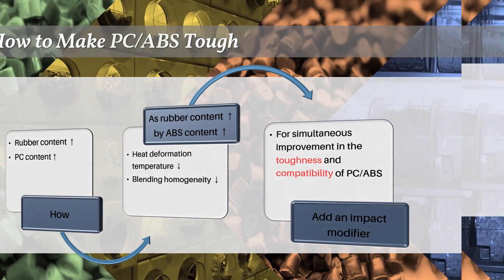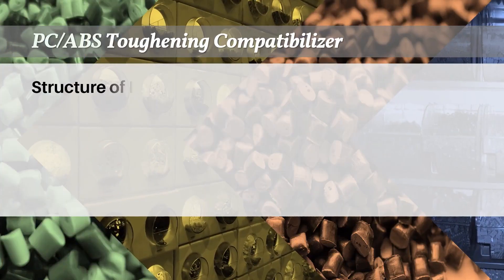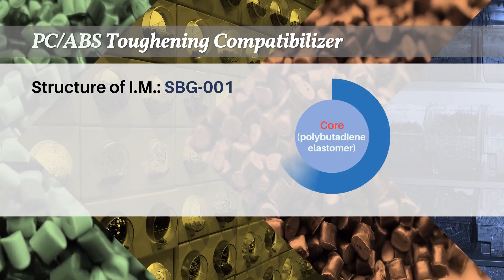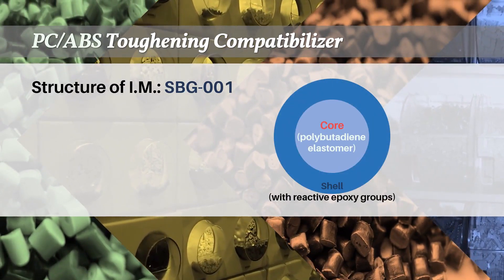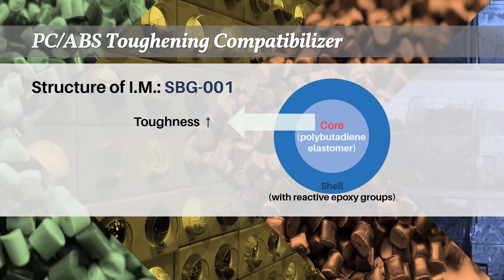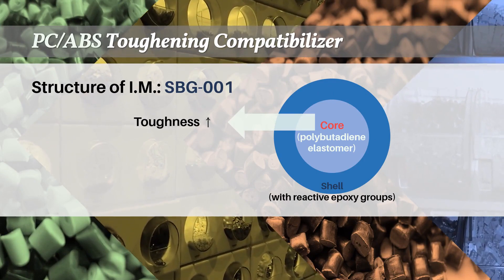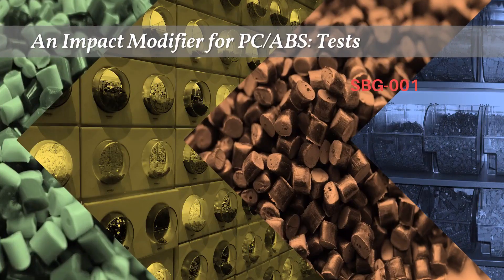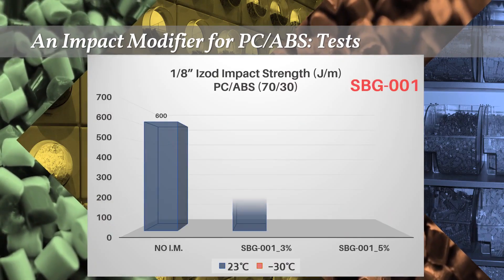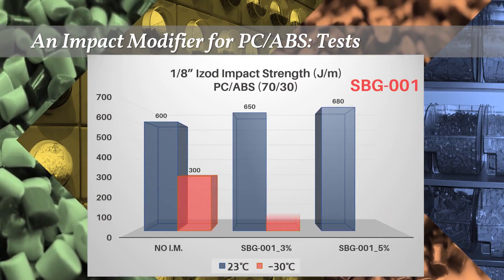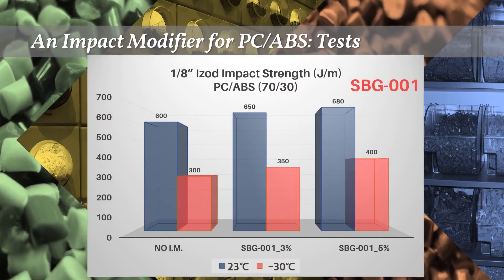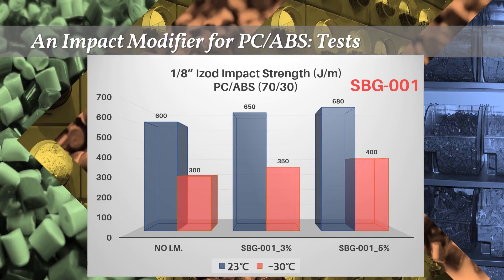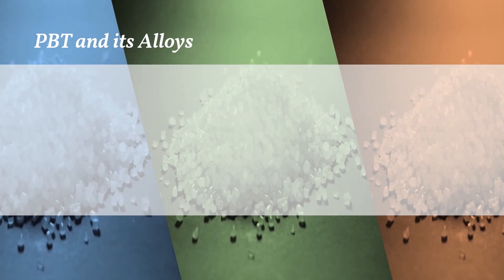A particle of Fine Blend impact modifier SBG 001 consists of a polybutadiene-based rubber core and an epoxy group grafted polymer shell, which induces chemical reactions to the ends of polycarbonate chains. It was found that adding SBG 001 increased the impact strength of PC/ABS alloys, and especially impact strength at low temperature was more effectively enhanced.